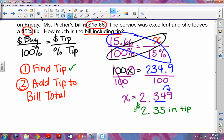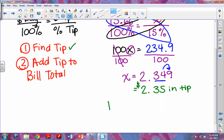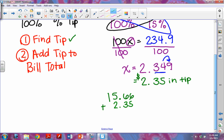So according to my checklist over here I've already found the tip. So now the second thing says I need to add tip to the bill total. My bill total was $15.66, so I'm going to have $15.66 plus $2.35. Remember when you add decimals you always line up the decimal spot.